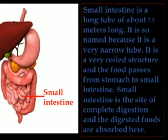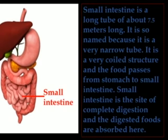The small intestine is a long tube of about 7.5 meters. It is so named because it is a very narrow tube. It is a very coiled structure, and food passes from the stomach into the small intestine. The small intestine is the site of complete digestion and the digested food is absorbed here.